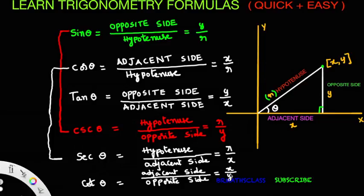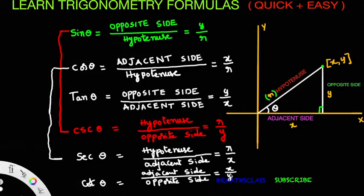Sin theta equals opposite side by hypotenuse. Cos theta equals adjacent side by hypotenuse. Tan theta equals opposite side by adjacent side. Cosecant theta is reciprocal of sin theta — hypotenuse by opposite side. Secant theta is reciprocal of cos theta — hypotenuse by adjacent side. Cot theta is reciprocal of tan theta — adjacent side by opposite side. This is the first set of trigonometry formulas.